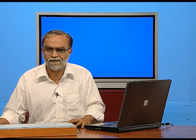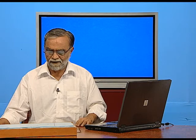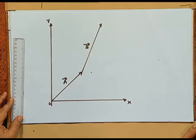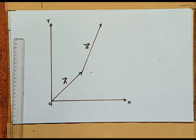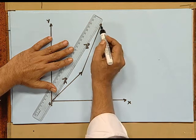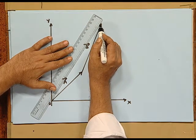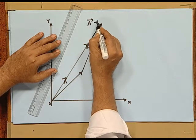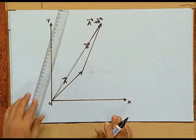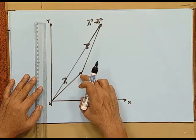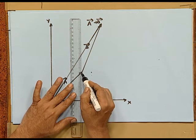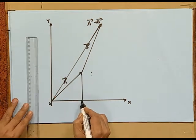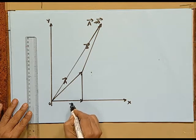Now, how is resolution of vectors used for vector addition? We have vectors A and B represented in the x-y plane. The sum A plus B can be obtained by the graphical method — by joining the starting point to the end point of B, giving vector A plus B. Now in the component method, if you resolve vector A along x and y directions, you get Ax component and Ay component.